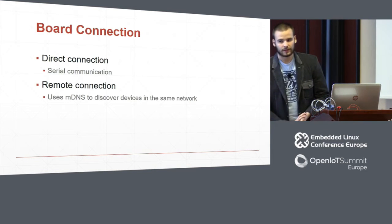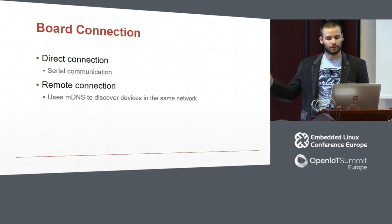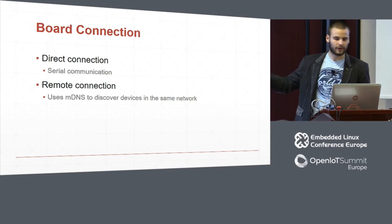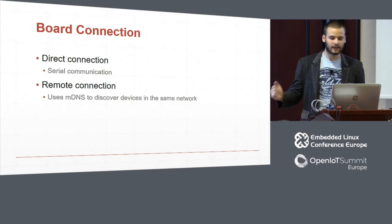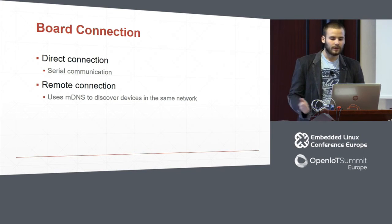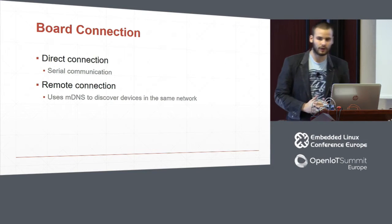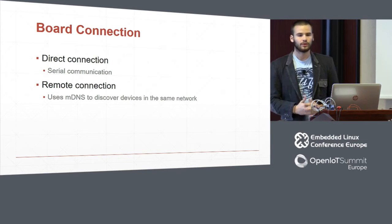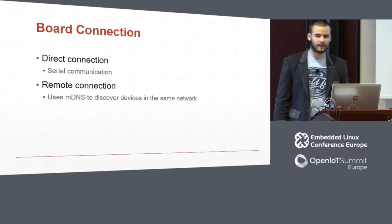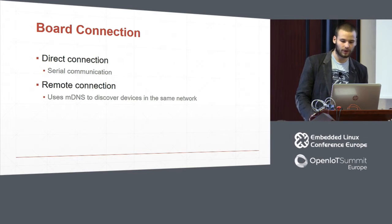These devices are Internet of Things, so if you put a device over the ocean, being an IoT device it can take an IP address, and you can connect to it directly. If the device is in our network, using Multicast DNS we can discover the devices and connect more easily.